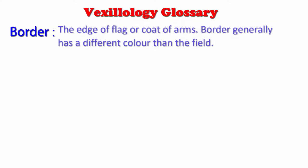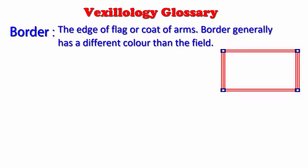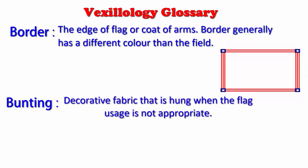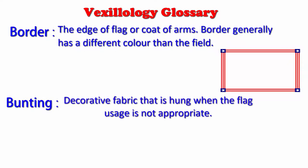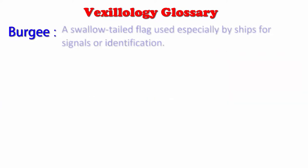Border: the edge of a flag or coat of arms. Border generally has a different color than the field. Bunting: decorative fabric that is hung when the flag usage is not appropriate. Burgee: a swallow-tailed flag used especially by ships for signals or identification.